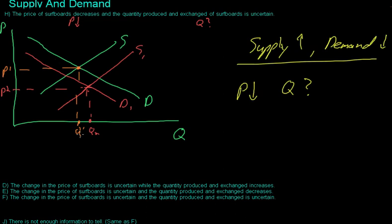But if demand had decreased by a lot and supply had only decreased by a little, let's say that this is now D2, then we could have this new quantity over here, we'll call this Q3, that has decreased. So we don't know what's going to happen to quantity.